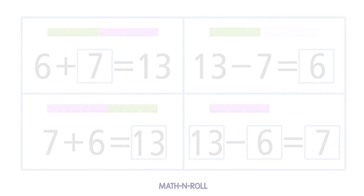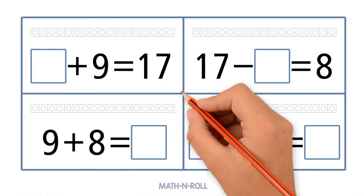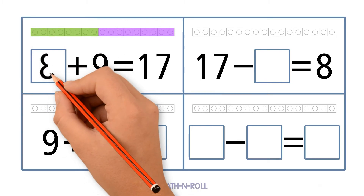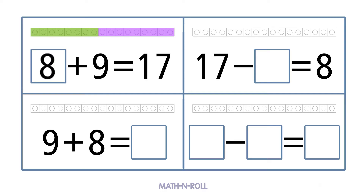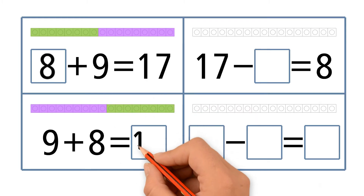Let's try another example. Use the model. Complete the related facts using addition or subtraction. Blank plus 9 equals 17. Take a look at the model. We have 9 pieces. How many more pieces do we need to make 17 pieces? We need 8 more pieces. So 8 plus 9 equals 17. The next related fact is also addition, but this time we change the order of the add-ins. So 9 plus 8 equals 17.